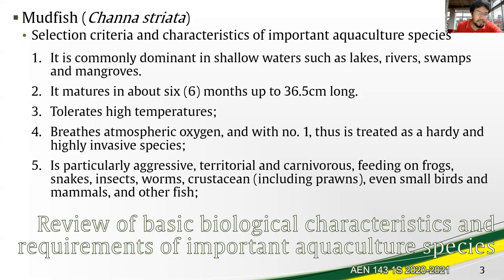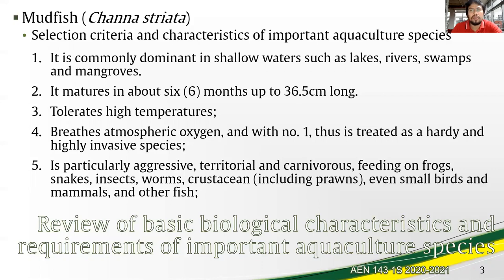As an invasive species, it is also because the mudfish is aggressive, territorial, and overall carnivorous — feeding on frogs, snakes, insects, worms, crustaceans, prawns, small birds, mammals, and most importantly other fish. Because of this, it cannot be grown with prawns or with tilapia, as the mudfish is a known predator of tilapia.